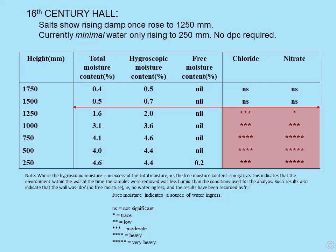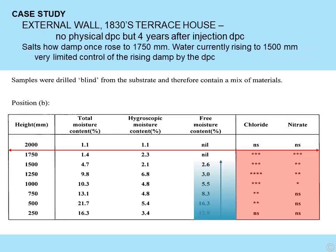Another interesting one was a 16th century hall where about nine or ten profiles were undertaken. It showed that rising damp had once risen to 1,250 mm; however when you look at the complete profile, water is now rising only to 250 mm — it had dried down quite significantly, and this was consistent across all the profiles. There was a proposal to install a physical damp proof course at a cost of many thousands of pounds, but the data did not support this. It showed basically there was no active problem — it was an old salt problem caused by many years of rising damp which was no longer active. No DPC required.